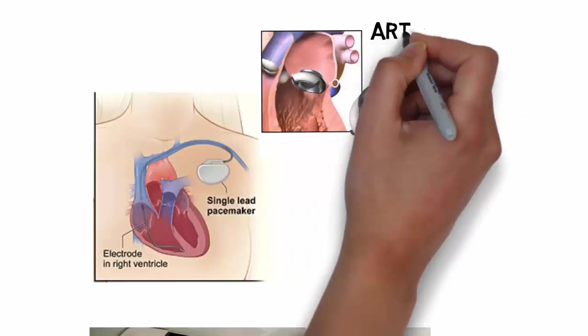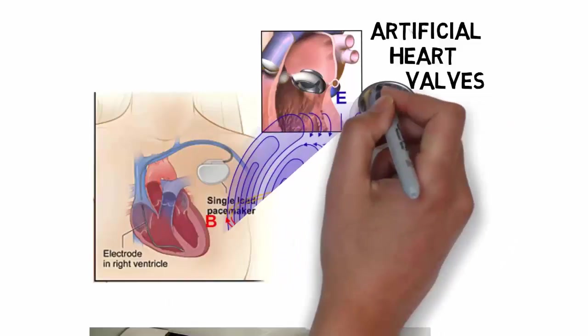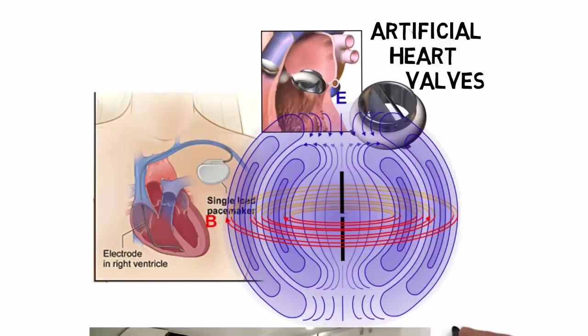People who have heart pacemakers, any metal transplants, artificial heart valves, and other surgically transplanted structures cannot be scanned with an MRI. This is because the powerful magnet of CT scan may move the metal chunks of these structures.